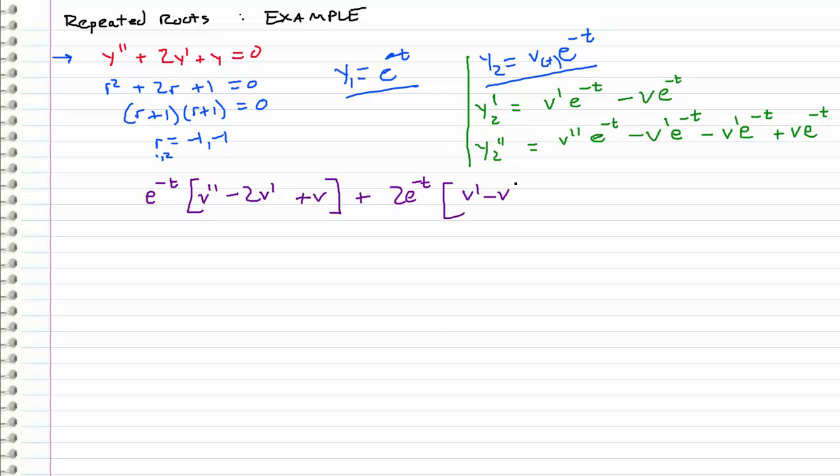So we're working with this y prime now. V prime minus v. And then finally plus a y in our differential equation, which just gives us v e to the negative t. Okay, so all that has to equal zero, because we are homogeneous.